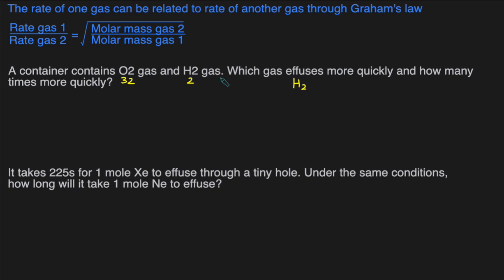To determine how many times more quickly, we can use Graham's Law. So we can write rate of H2 divided by rate of O2 equals the square root of the molar mass of O2 divided by the molar mass of H2. So notice how I switched to H2 on top and it's on the bottom. Now let's plug in the numbers. The molar mass of O2 is 32 and the molar mass of H2 is 2. 32 divided by 2 is 16, so square root of 16 is 4. That means that H2 is going to effuse 4 times more quickly than O2.